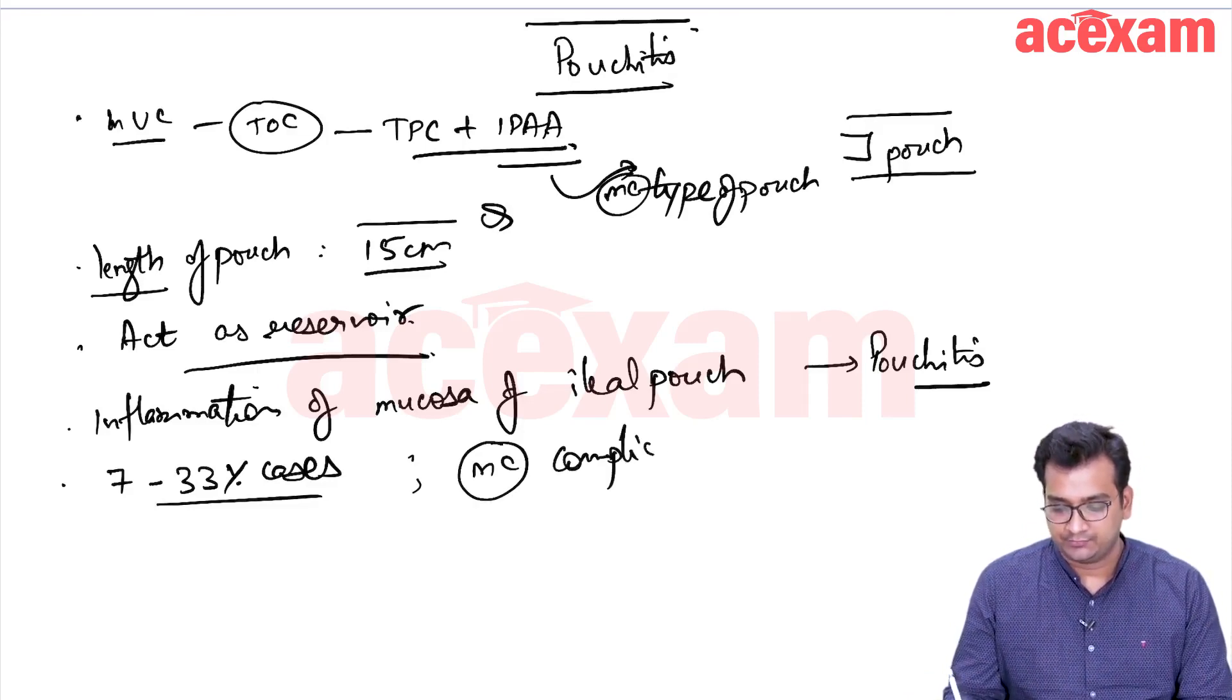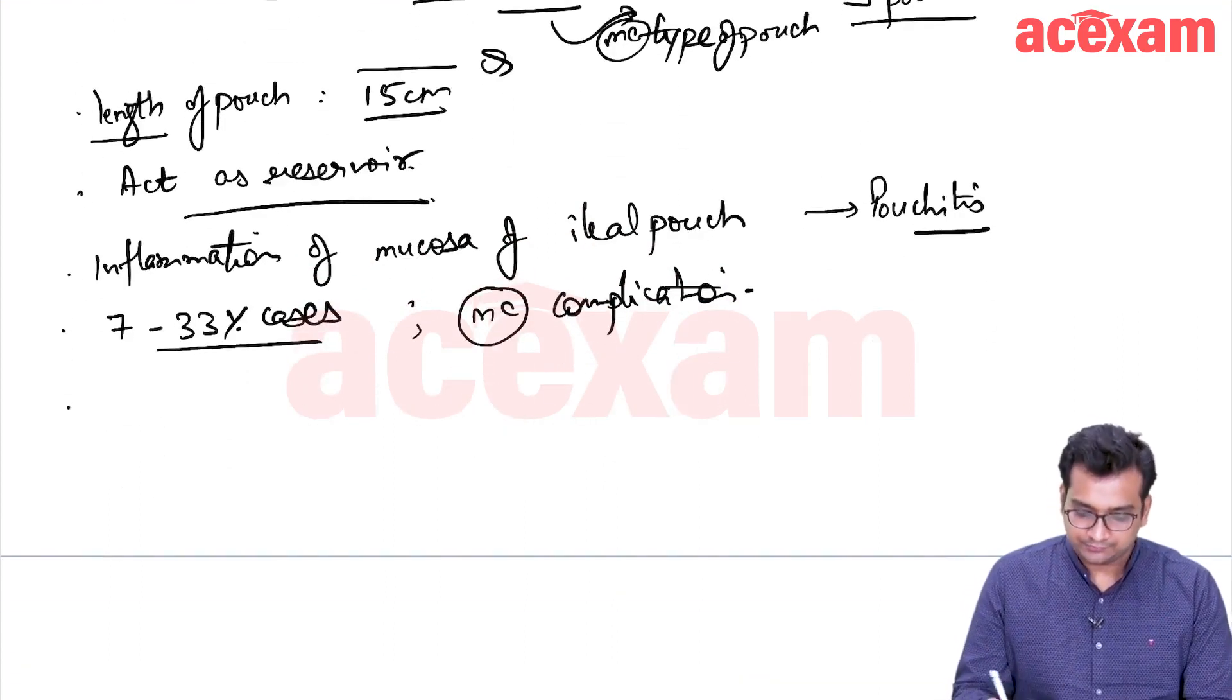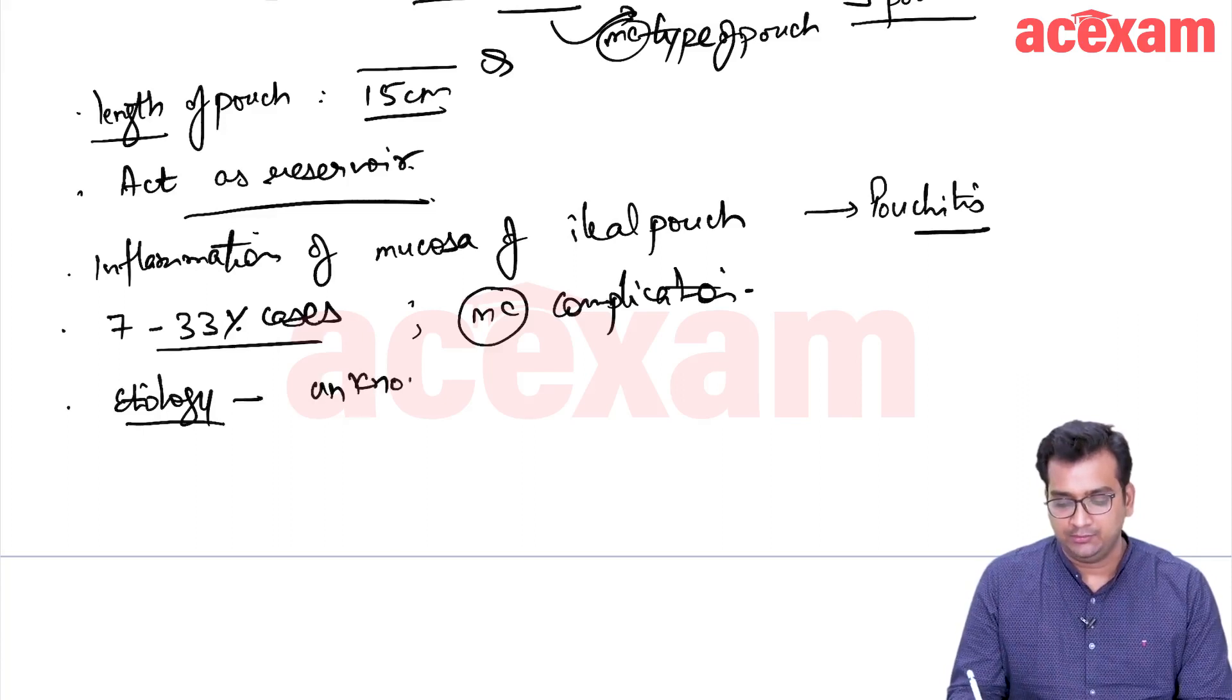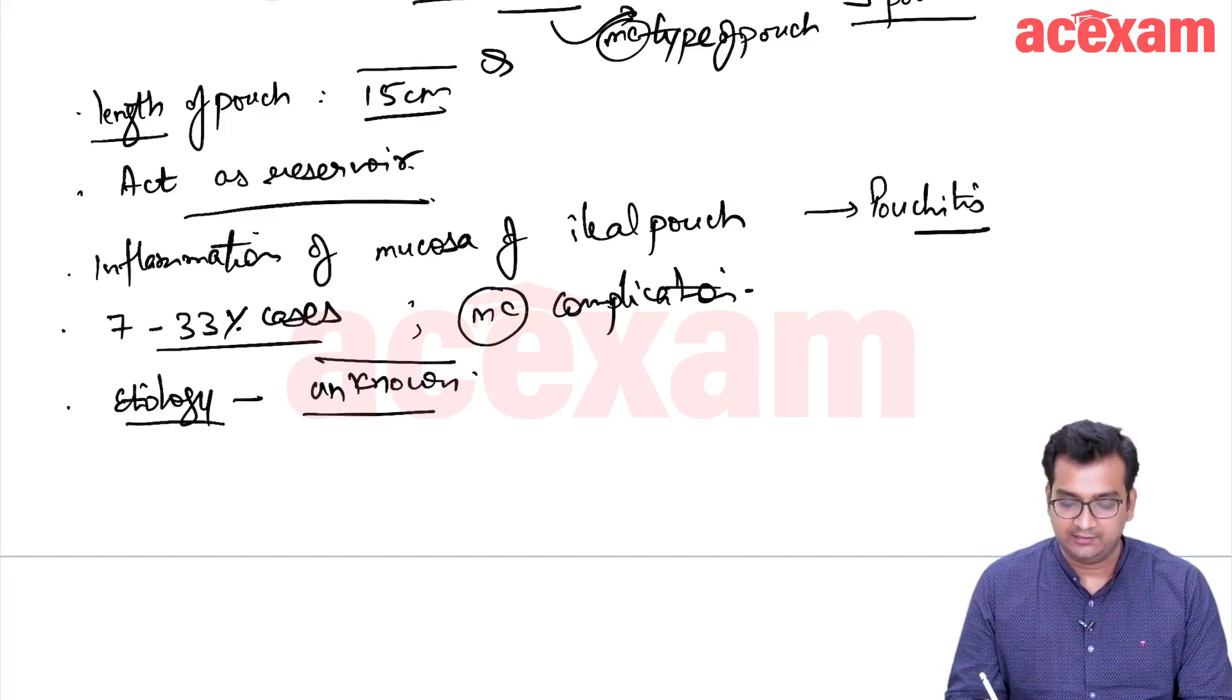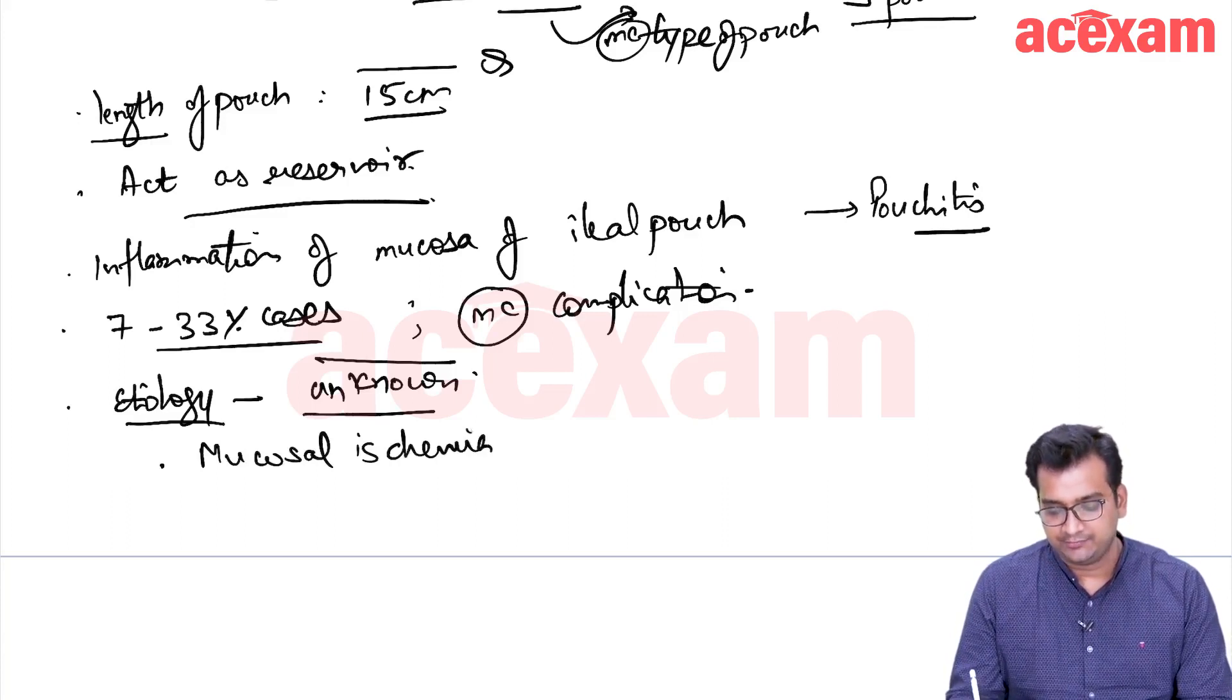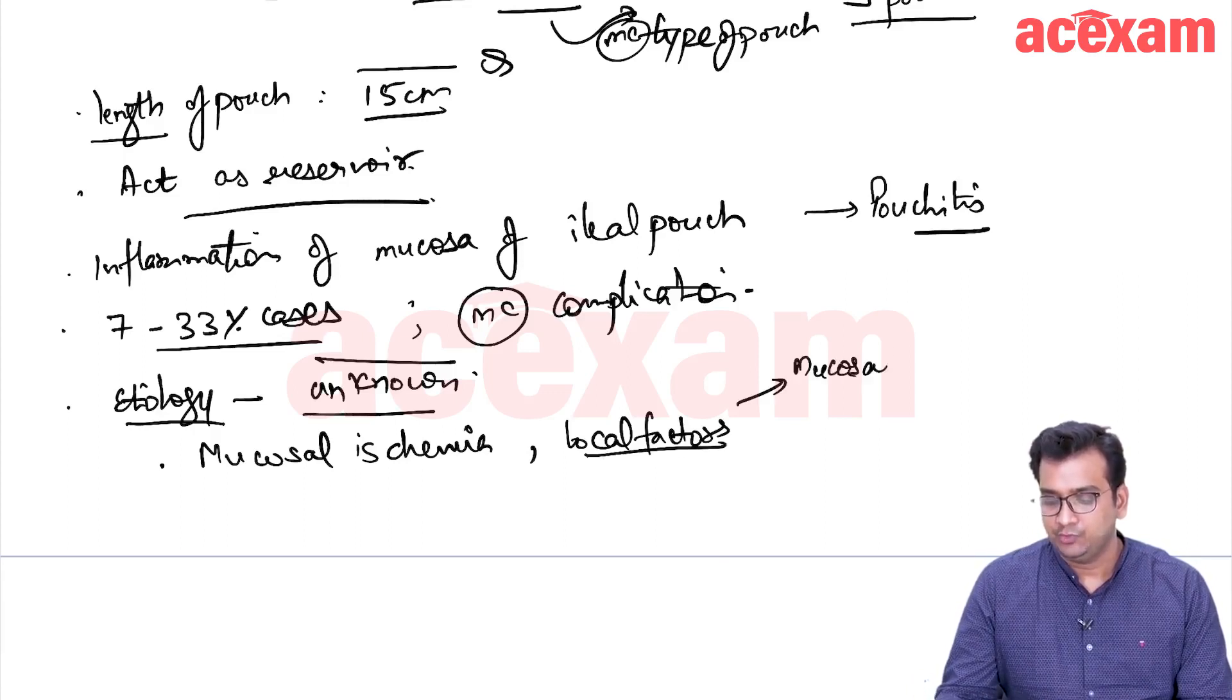What is the etiology? Overall, the etiology is unknown, but there are certain hypotheses which explain why pouchitis is occurring. They say that it may be due to mucosal ischemia or local factors like mucosal inflammation or bacterial overgrowth.